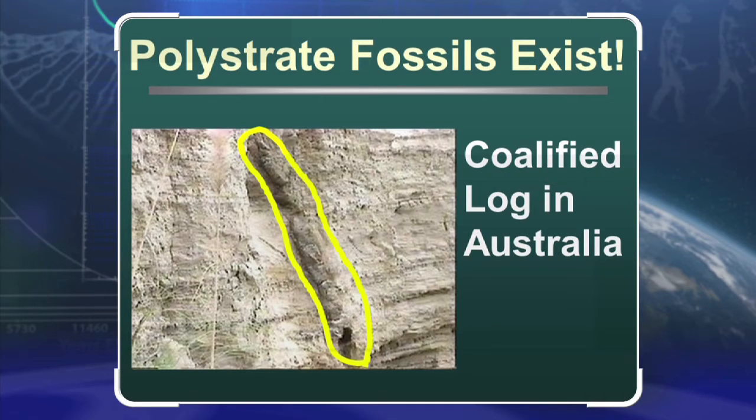It's a polystrate fossil — poly meaning many, strat meaning strata, strata meaning layers. Could this have possibly grown here while these layers formed around it slowly and gradually? No. Number one, it has no top, no bottom. This is a log that was transported here in water — muddy water — and that muddy water laid down layers, and the log was included.